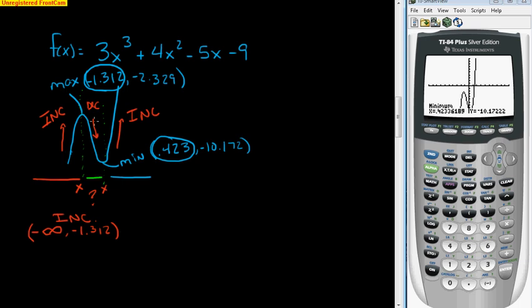Now, in the green part right here, we can see that we're decreasing. This is going back down. We know that we're decreasing right here. Well, between what two x values are we decreasing? Well, we are decreasing between negative 1.312, and that's going to the minimum, and the x value for the minimum is 0.423. And then we will label it decreasing.